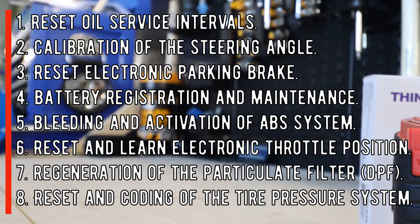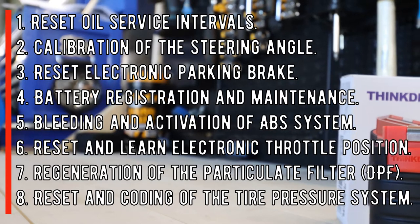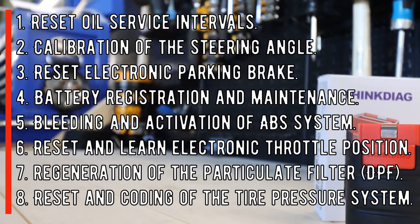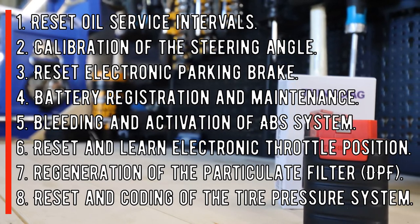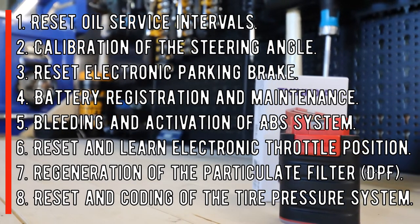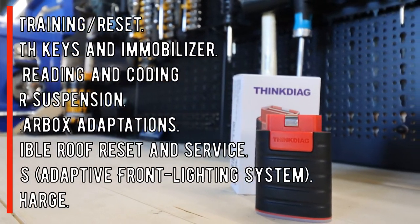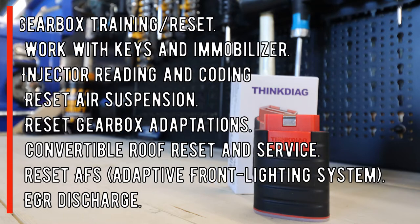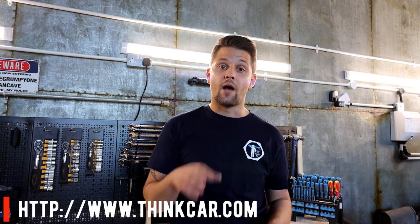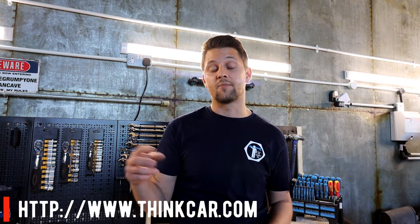Speaking about the 16 different reset functions — some of the common ones are DPF regen reset, which is very common, and EGR reset as well, which you'll need on some vehicles after installation. You've got ABS bleeding, especially for hybrid cars like Toyotas if you've got air in the system. There's convertible roof reset for Audi A4 and A5, tyre pressure sensor reset, air suspension reset, throttle body learning, and injector coding — plenty of great functions. I'll have the full list in the description below.